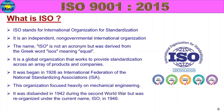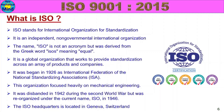ISO was disbanded in 1942 during the Second World War but was reorganized under the current name ISO in 1946. The ISO headquarters is located in Geneva, Switzerland. This is a brief explanation of the basic details of ISO.